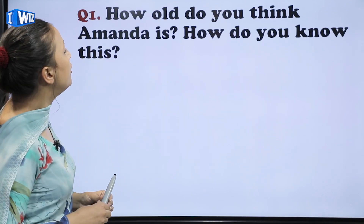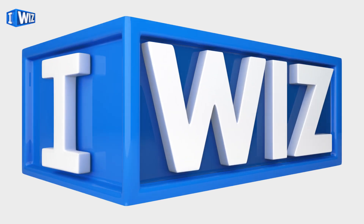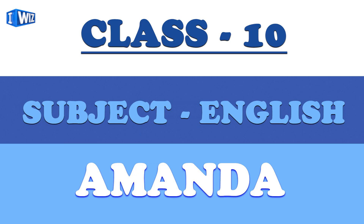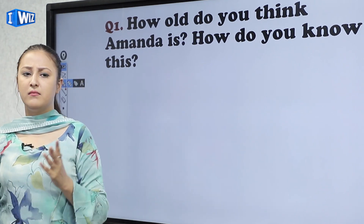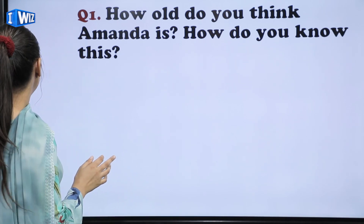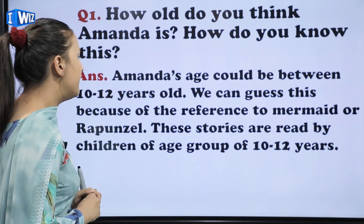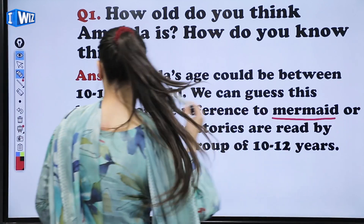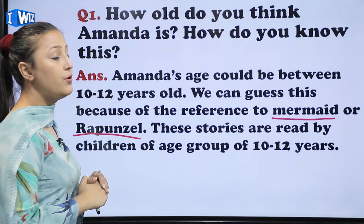The first question is: how old do you think Amanda is? How do you know this? Amanda's age could be between 10 to 12 years old. We can guess this because of the reference to mermaid and Rapunzel. These stories are read by children of age group of 10 to 12 years.